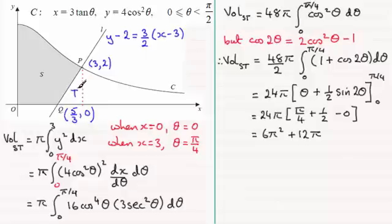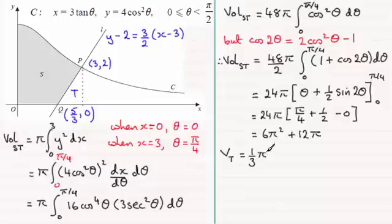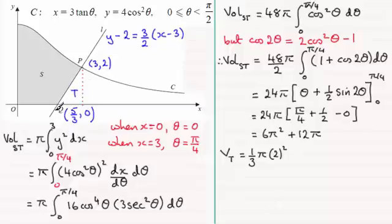Now we find the volume generated by T, which is a cone when spun about the x-axis. The volume of a cone is (1/3)πr²h. The radius r is the y-value at P, which is 2, and the height h is the horizontal distance from x = 5/3 to x = 3, giving h = 3 − 5/3 = 4/3. So V(T) = (1/3)π(4)(4/3) = 16π/9.